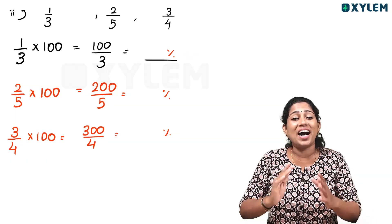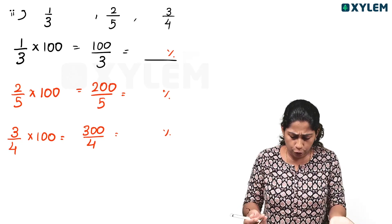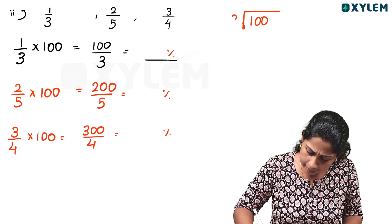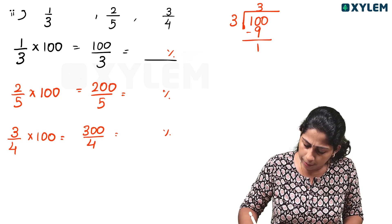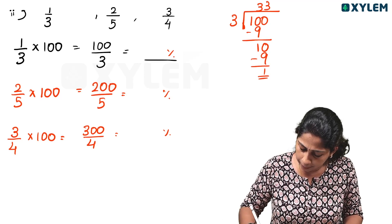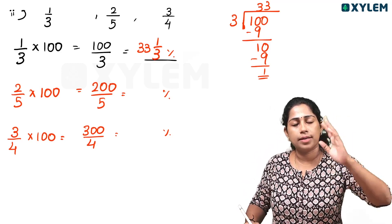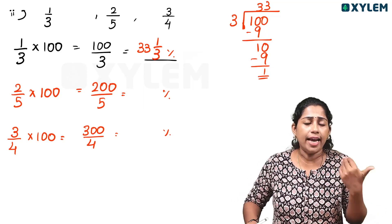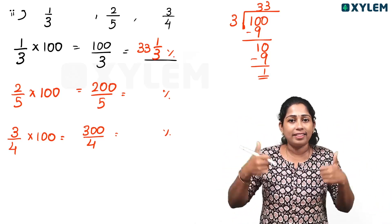How do we get 100 divided by 3? 3 threes are 9, separator 1 balance, 10 — 3 threes are 9, separator 1 balance. So we write 33 and 1 by 3 percent. 33 and 1/3 percent — that's all. You don't have any confusion. This is the fraction to percentage. The key is always multiplying by 100.